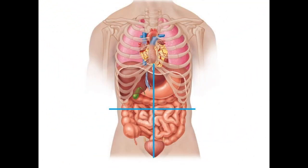Hello everyone. This video is going to cover some of the activities from Lab 1, which we'll go over in more detail during class. The last lecture I may have referred to the heart as being medial to the lungs and superior to the liver. I might also say that the lungs are lateral to the heart and the liver is inferior to the heart.